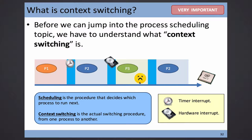The scheduler steps in at the moment highlighted in light blue to choose the next process to run. For instance, if P2 was waiting for input and that input is now available, the scheduler can choose P2. Or if the data isn't available, it can choose P1 again — P1 was stopped only because its clock quota expired, so after recharging its quota, it can continue. It's all up to the scheduler.